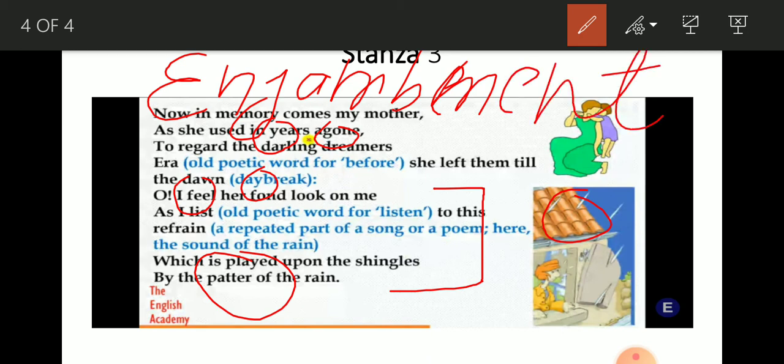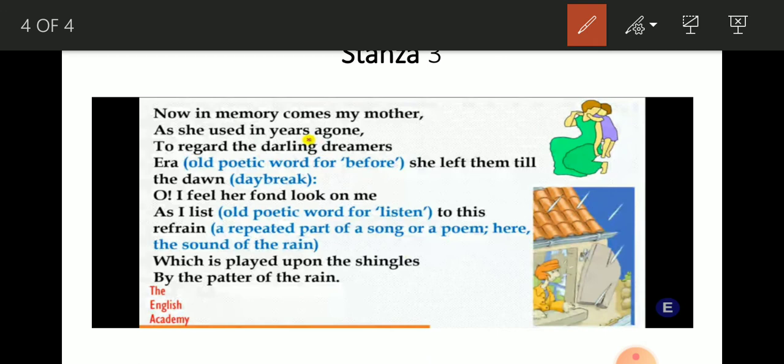So I would like you to just know this as well. So enjambment is there. You can look for other examples of enjambment if they are in stanza 2 and 1 as well. So here the poem has been explained to you in the best possible way. And I hope you will be revising it.